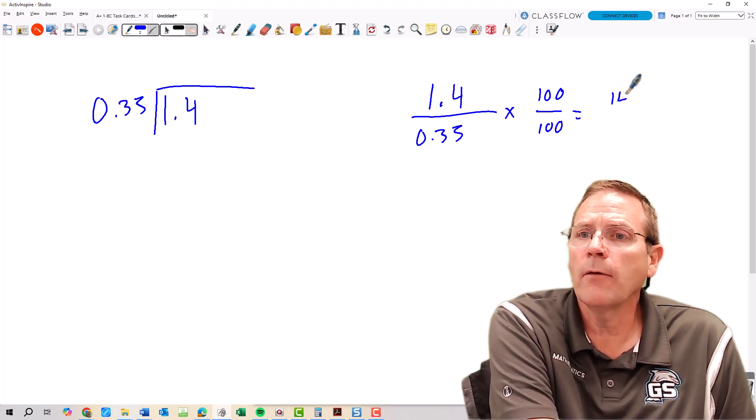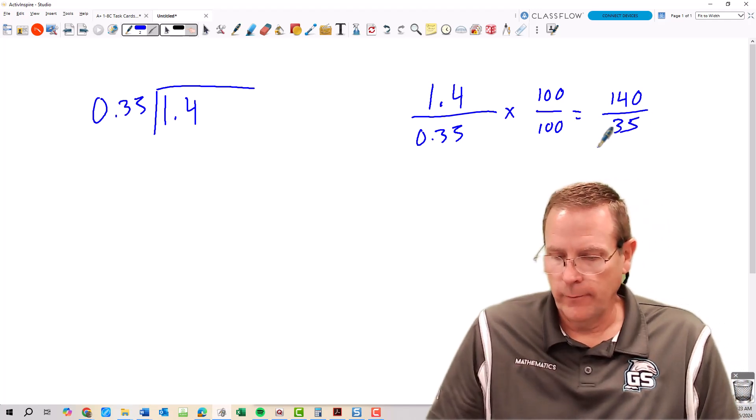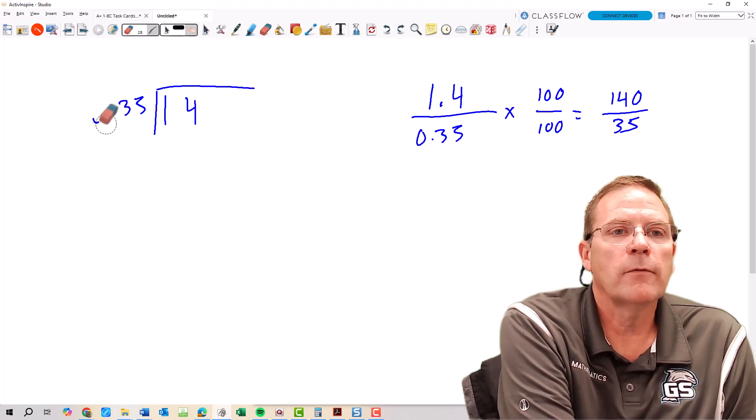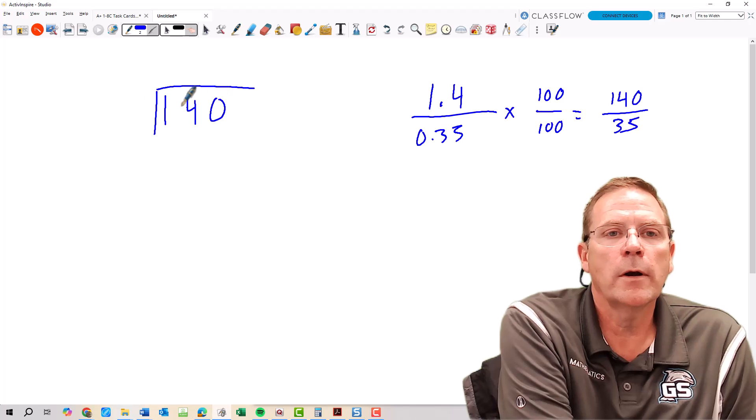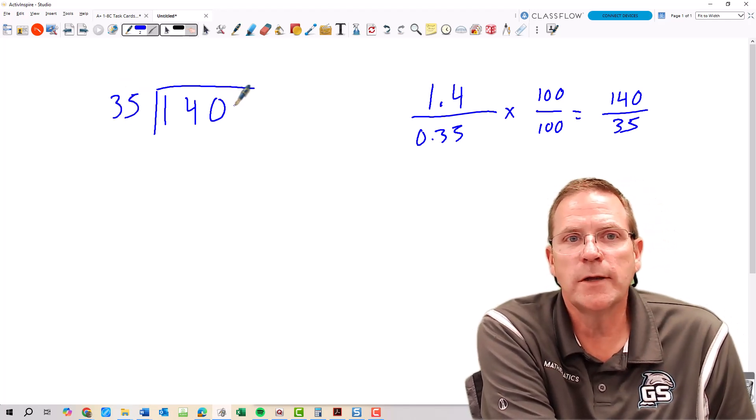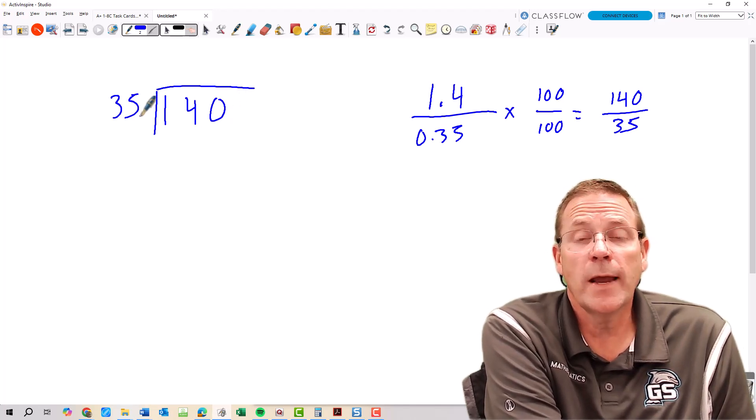That means I can fix this part here and get rid of that and let's make that right a little bit neater there. So now I have 140 divided by 35. 140 is your dividend, it goes in the house. 35 is your divisor, it goes outside the house.